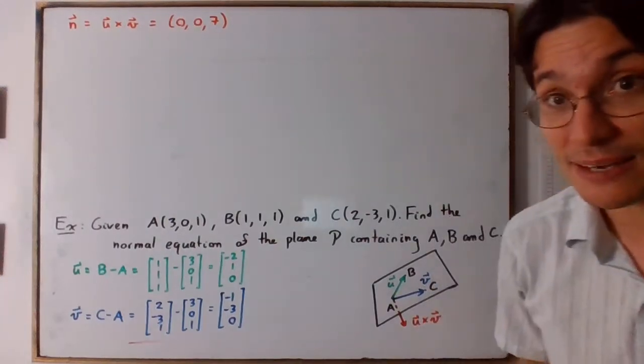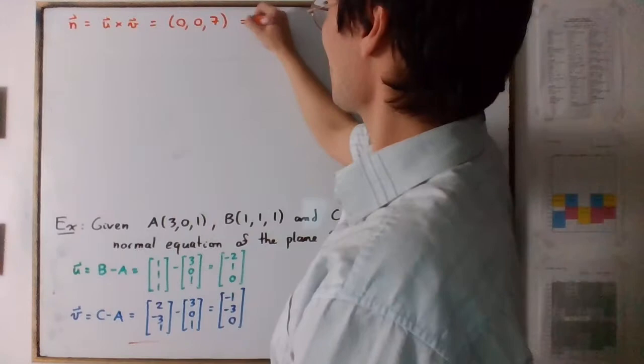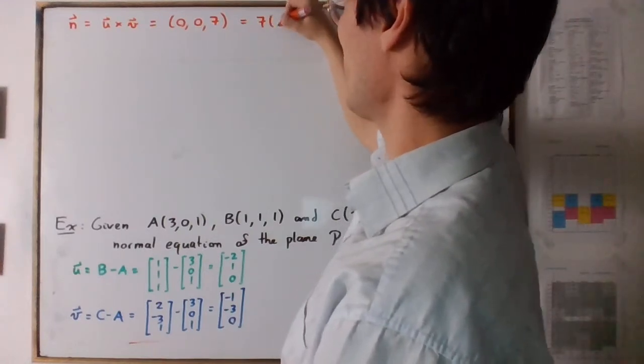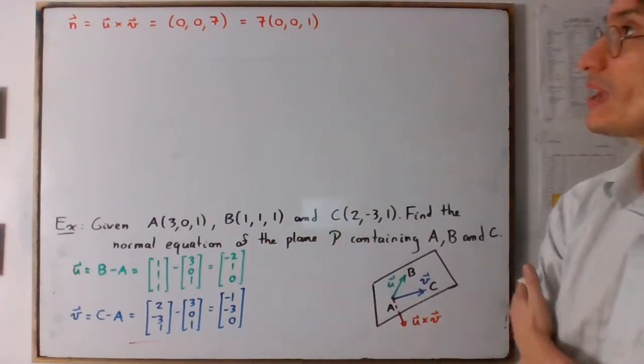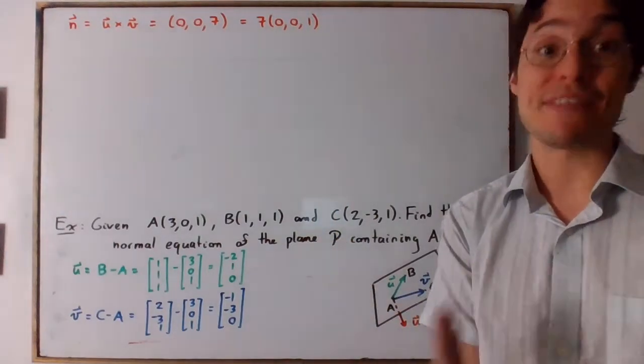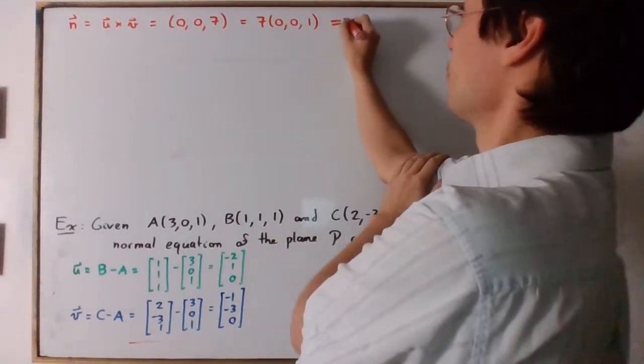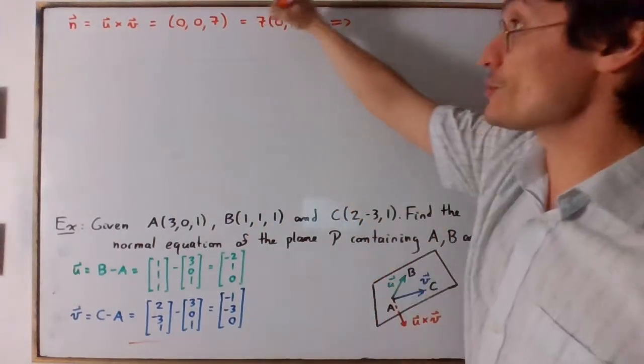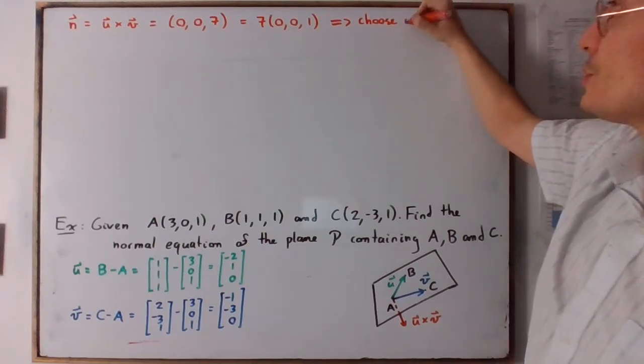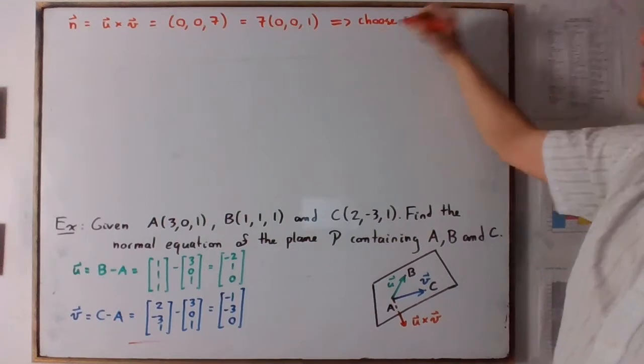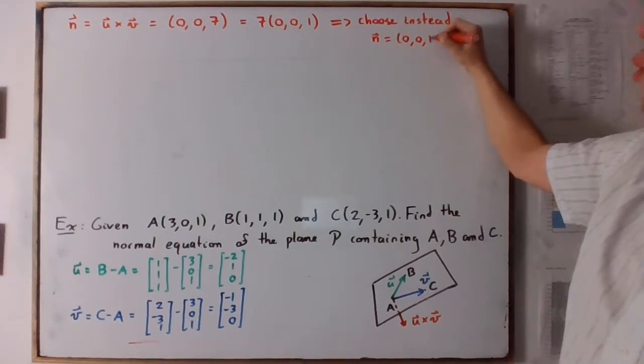That being said, so it turns out that this vector is a scalar multiple of the vector 0, 0, 1. And we're going to use this to our advantage. So, instead of choosing the cross product, we will choose, so choose instead, n to be equal the vector 0, 0, 1.